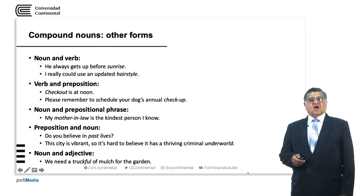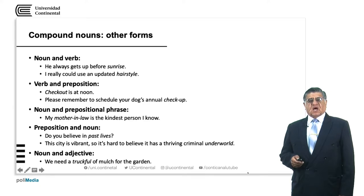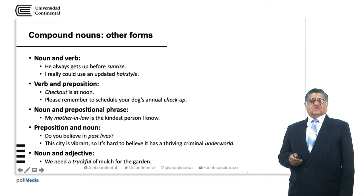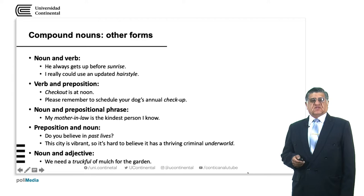A verb and a preposition. 'I really could use an updated hairstyle.' We have two compound nouns: 'updated' — that is up to date, up to the moment. And 'hairstyle' — a very particular style of combing or using hair, with color, forms, cuttings, as we have seen lately.